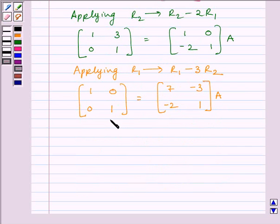Clearly, this is our identity matrix. Now, we know I is equal to A inverse multiplied by A. So, comparing the two expressions, we get A inverse is equal to this matrix.